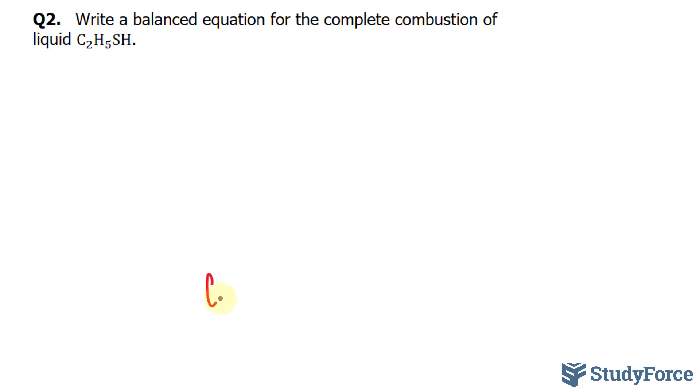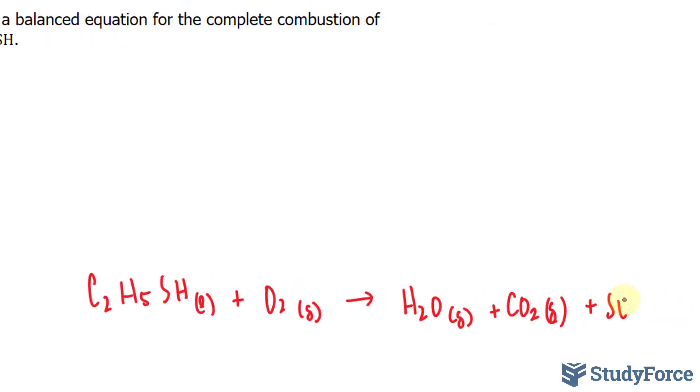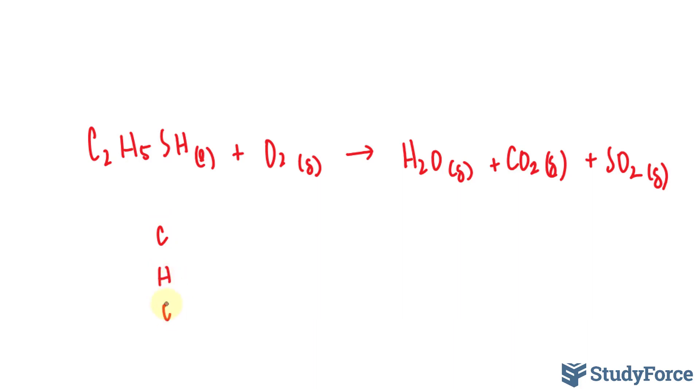So we have C₂H₅SH, and that's liquid, plus O₂ gas. This yields H₂O gas plus CO₂ gas and sulfur dioxide gas, which is SO₂ gas. Let's survey all the elements. We have C, H, O, and S on both sides.